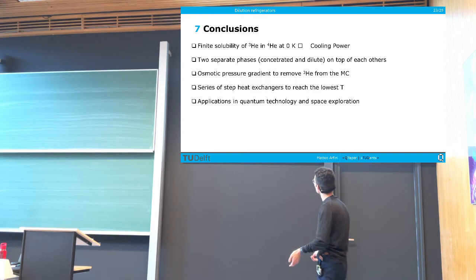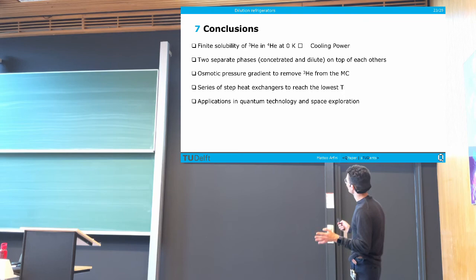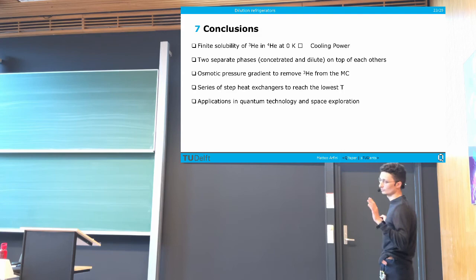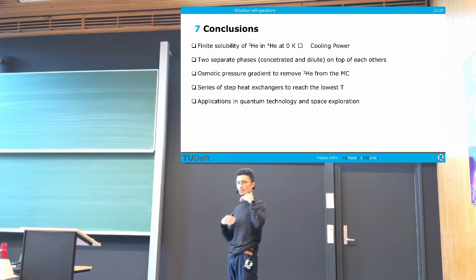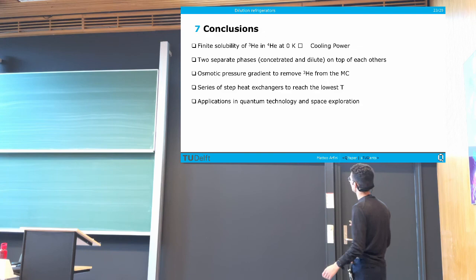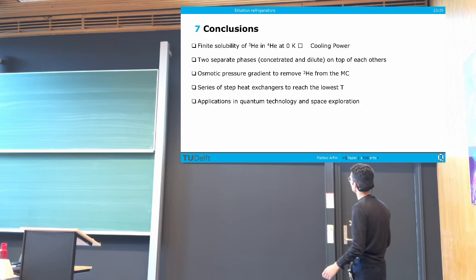Now I will conclude. With this overview of the system, five key concepts remain: the finite solubility of helium-3 in helium-4, which gives us the cooling power; two well-separated phases — the concentrated and the dilute phase; an osmotic pressure gradient to remove helium-3 from the mixing chamber; the lowest temperatures achieved through a series of heat exchangers; and wide-ranging applications from quantum computing to space. Thank you.